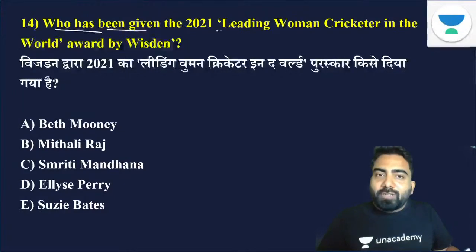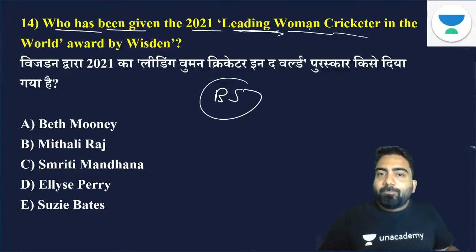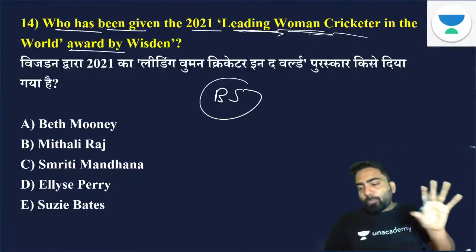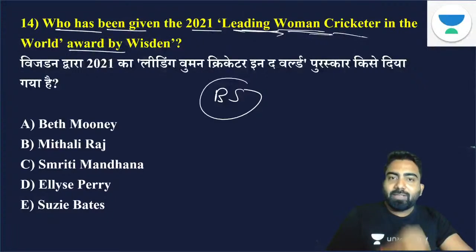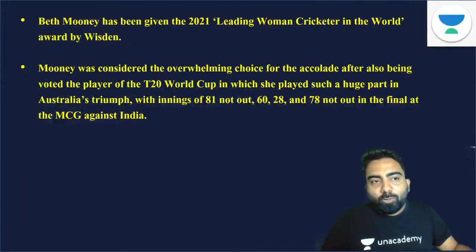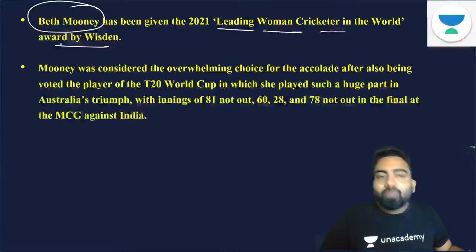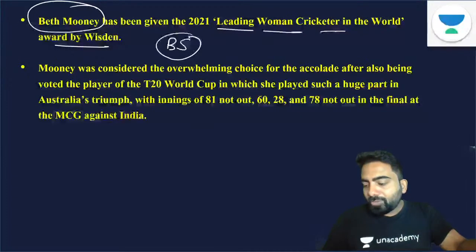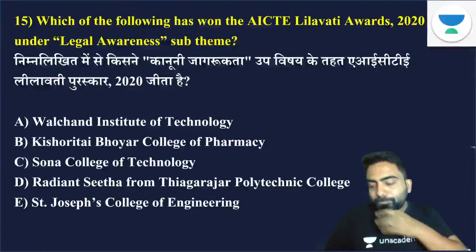Who has been given the 2021 Leading Woman Cricketer in the World award by Wisden? In the male category, Ben Stokes received this award. The answer is Beth Mooney — option A is the right answer. Beth Mooney belongs to Australia, and she was given the Leading Woman Cricketer in the World award by Wisden.